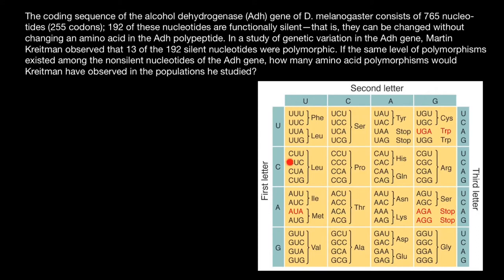Four multiplied by four multiplied by four gives us the total number of combinations: 64. According to our problem, at the third position — which we also call the wobbling position — usually if you change a base there, the codon would still code for the same amino acid. As you can see, the first two positions are the same, but the last one can be uracil, cytosine, adenine, or guanine, and it still specifies the same amino acid.